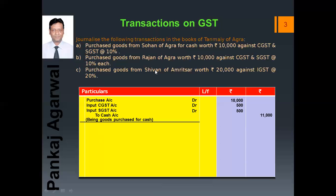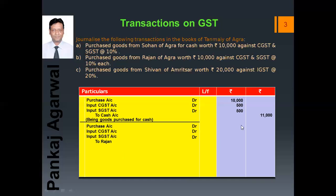Next: purchase goods from Rajan of Agra worth ₹10,000 against CGST and SGST at the rate 10% each. Here the word 'each' is used, meaning CGST itself is 10% and SGST itself is 10%. The journal entry will be the same, just to Rajan because the goods are purchased on credit. The purchase amount will be ₹10,000, 10% of ₹10,000 comes to ₹1,000 for CGST, and again ₹1,000 for SGST. The total will be ₹12,000, which will be written under Rajan.